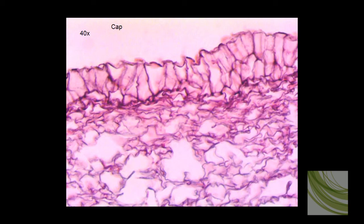Here is another slide using the 4x objective in which we can see an edge of the cap. Remember, mushrooms are made up not of cellulose but of chitin.